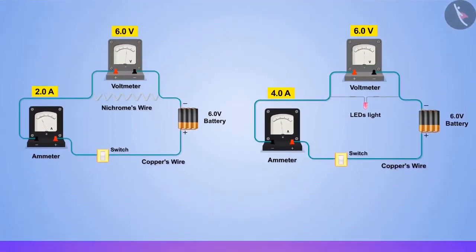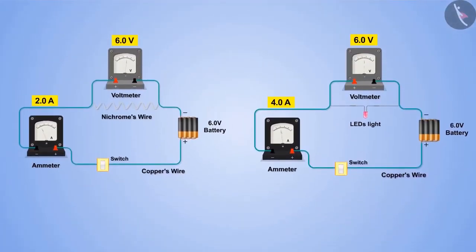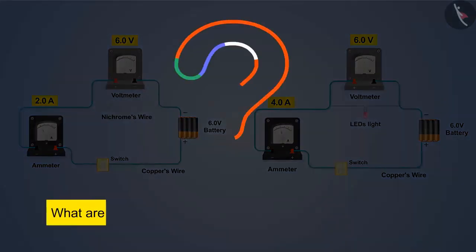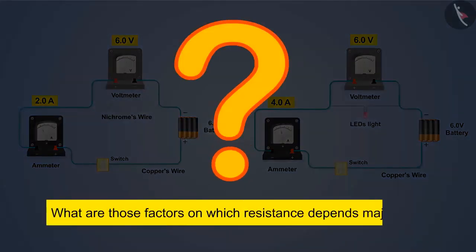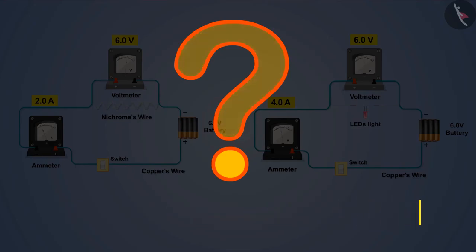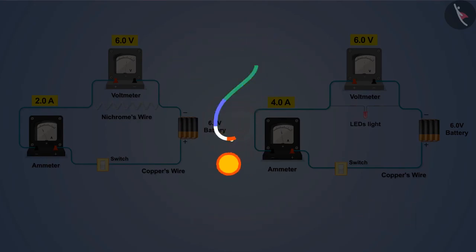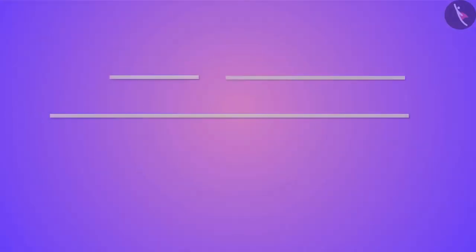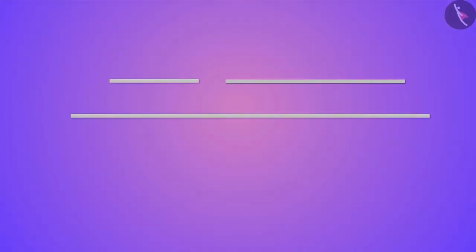Every object has its own resistance, but the question is: what are those factors on which resistance depends? In today's video, we will see which factors resistance depends on, and also we will look at the different ways of connecting resistance in the circuit. Come on, let's perform an activity to understand this.